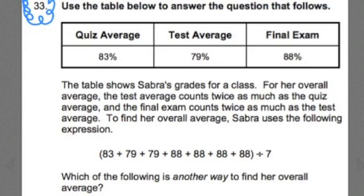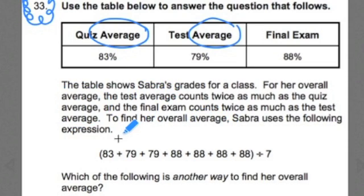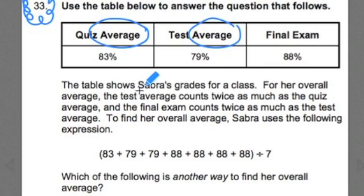I pointed out the word 'average' appearing in the table, and it appears throughout the question itself multiple times. This really means that average is our central concept. So let's look at the question and the expression and see if we can match up how average fits into this problem. We're told that the test is worth twice as much as the quizzes, and the final exam is twice as much as the test.